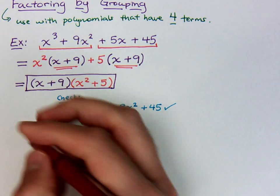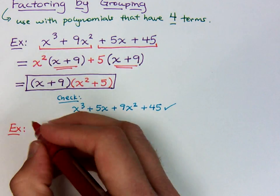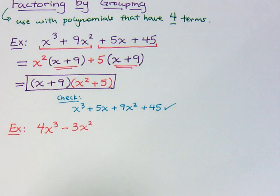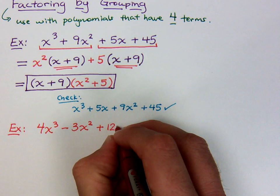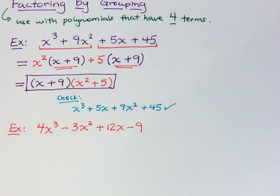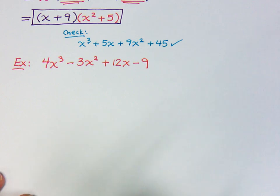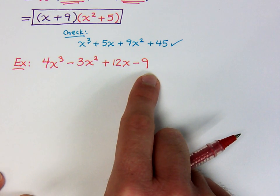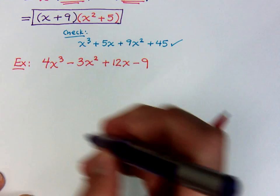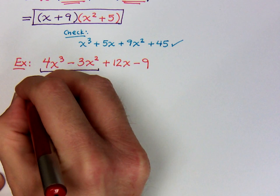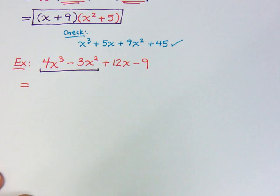Let's do another example. Let's work with this example: 4x to the third minus 3x squared plus 12x minus 9. When I look at this, first of all, is there a common factor for everybody? Is there anything that goes into all of these guys? And the answer is no. Let's look at this first group right here. Do these guys have anything in common? 4 and 3 are prime numbers. They're relatively prime, which means they have no common factor other than 1. But you'll notice that they do have a common factor of x squared.